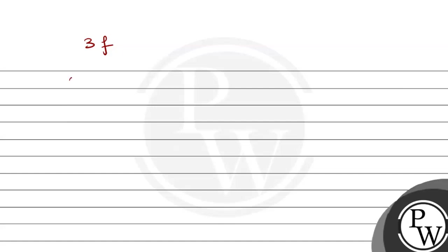And what is the last value? 3f. So for 3f, n is 3. So what is l value? 0, 1 and 2. So this is s, this is p, this is d. So what does it mean? 3 goes up to d. So 3f is also not possible.